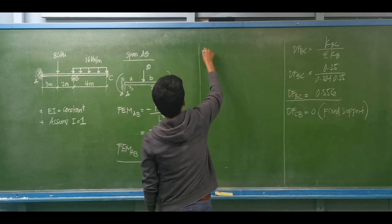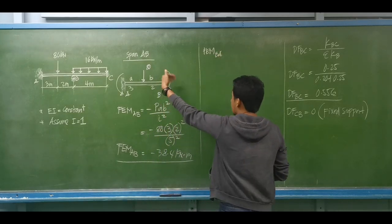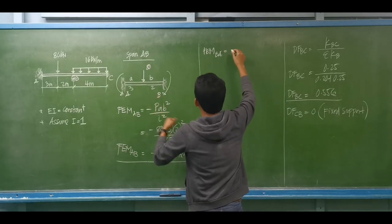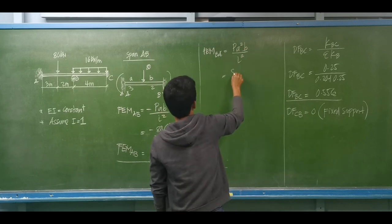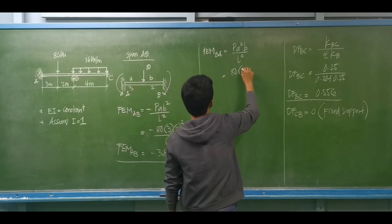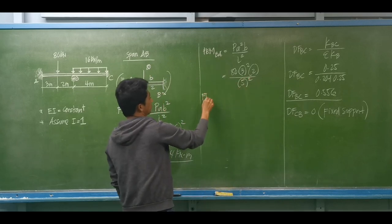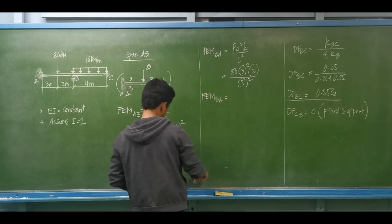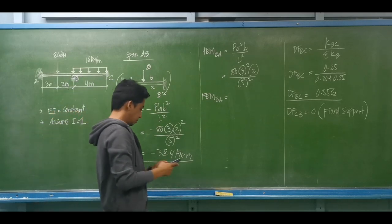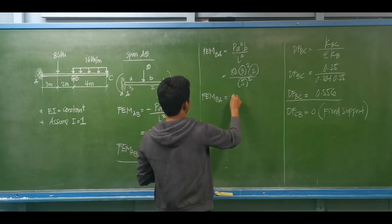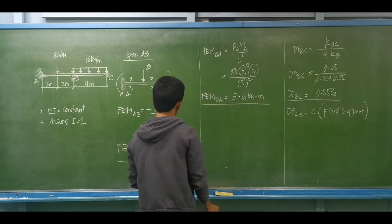For member BA, the moment on the right support is assumed clockwise and positive. The formula is P·a²·b divided by L². That is 80 × 3² × 2 divided by 5², which equals positive 57.6 kN·m.